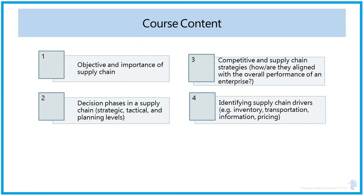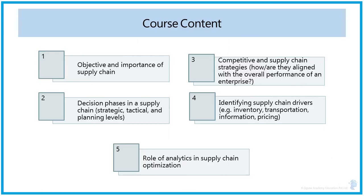The third topic compares how competitive and supply chain strategies are aligned with overall enterprise performance. The fourth topic identifies the various drivers of a supply chain — inventory, transportation, facility, and cross-functional drivers like information and pricing. Finally, we will understand how analytics helps improve supply chain performance by optimizing the various parameters and drivers discussed.